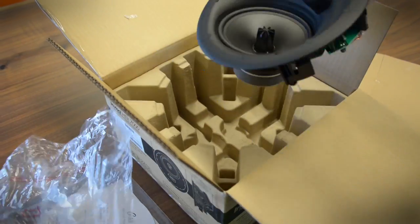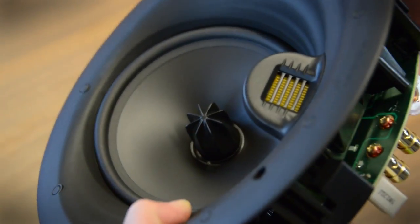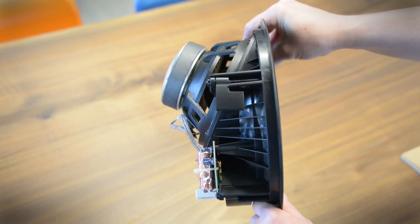Next you'll need some speakers. We went with the GoldenEar HTR 7000, easily one of the best sounding in-ceiling speakers we've heard. They go for about $500 each.